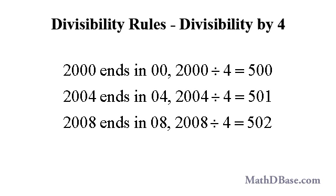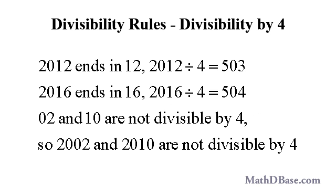Most years that are divisible by 4 are leap years — years in which February has 29 days instead of the usual 28. 2000, 2004, 2008, and 2012 are the 4 most recent leap years, and 2016 will be the next. 2000 ends in 00, and the last two digits 04, 08, 12, and 16 of the other years are divisible by 4. 2000÷4=500, 2004÷4=501, 2008÷4=502, 2012÷4=503, and 2016÷4=504.